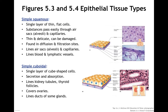Simple cuboidal cells are single-layered, cube-shaped cells — again, not perfect cubes, but roughly the same width as height. They're found in places where we're going to have secretion and absorption. There are a lot of them in the tubules of the kidneys and in the thyroid follicles. They're also found in the ovary and lining some ducts in certain glands.